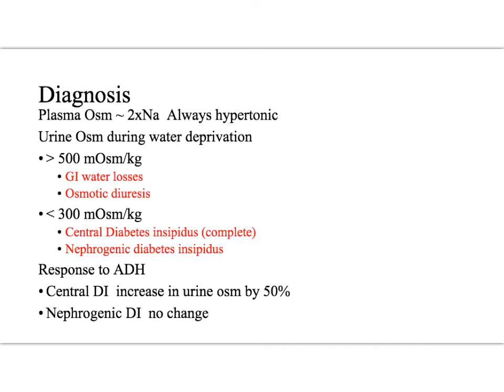When it comes to diagnosing hypernatremia, the patients will be hypernatremic — you check a serum sodium via any serum chemistry and you'll see a sodium greater than 146. In this setting, these patients are almost always hypertonic, because plasma osmolarity is approximately two times the serum sodium. One of the ways we can differentiate different etiologies of hypernatremia is to check the urine osms during water deprivation. If the urine osms are greater than 500, we think these are GI water losses or osmotic diuresis.